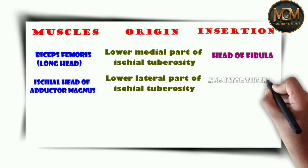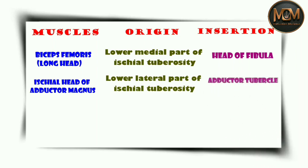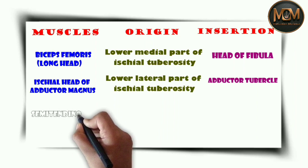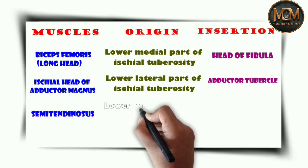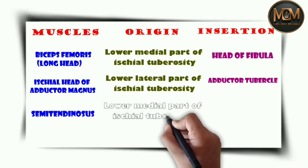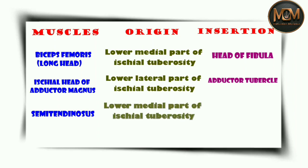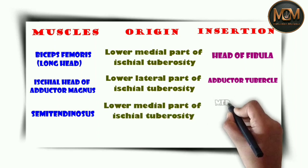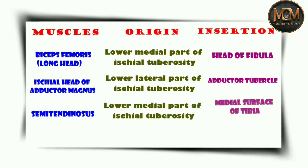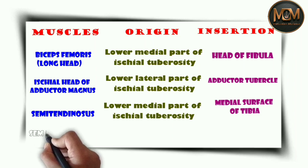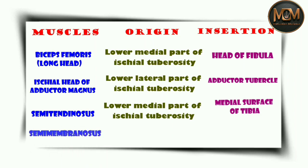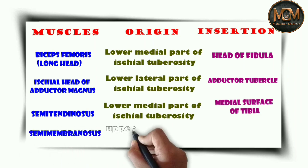The origin of the semitendinosus is the lower medial part of the ischial tuberosity, and it is inserted into the medial surface of the tibia. For the semimembranosus, the origin is the upper lateral part of the ischial tuberosity, and it is inserted into the medial condyle of the tibia.